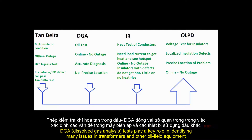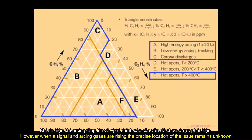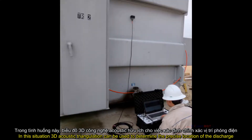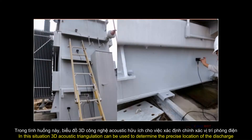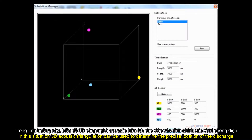DGA tests play a key role in identifying many issues in transformers and other oil-filled equipment. However, when acetylene and arcing gases are rising, the precise location of the issue remains unknown. In this situation, 3D acoustic triangulation can be used to determine the precise location of the discharge.